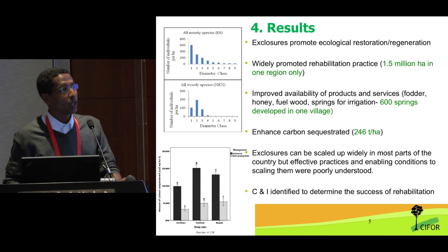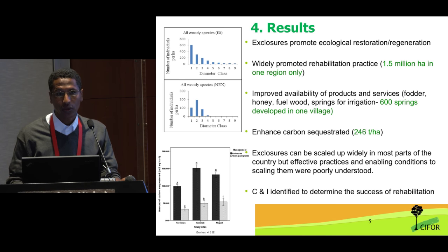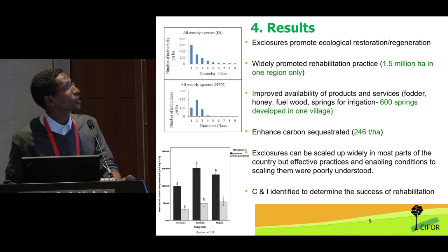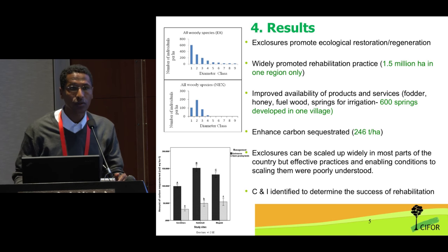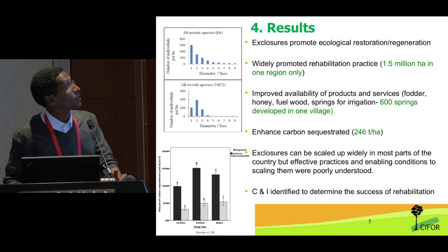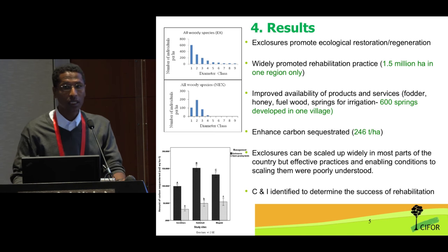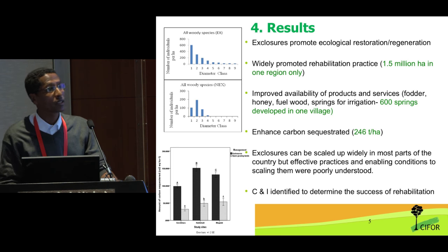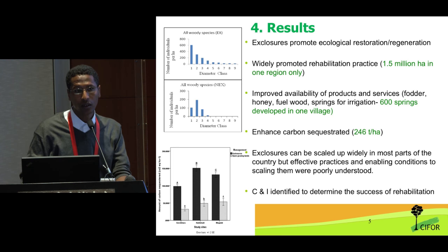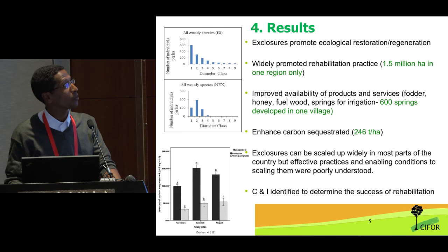The results we found: the exclosures have met their intended objectives. The first objective was to restore the ecology — in most cases there is good regeneration of pioneer species, and in some areas also non-pioneer species. It is widely accepted, especially in the northern and central parts of the country. In only one region you can find up to 1.5 million hectares of area being restored, and the community has also witnessed some economic benefits.